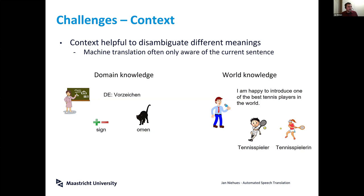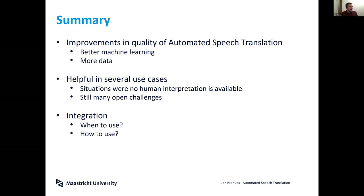Sometimes you even need world knowledge outside the text for the right disambiguation. For example, if an English moderator introduces someone with 'I'm happy to introduce one of the best tennis players in the world,' you need to know whether the player is female or male because they are just different words in German. Currently MT systems focus only on the text and are not able to do that.